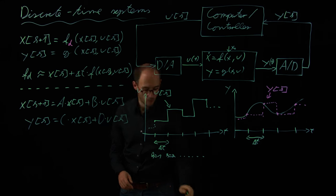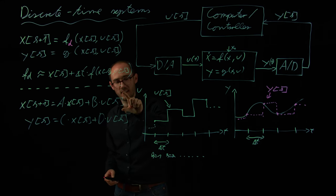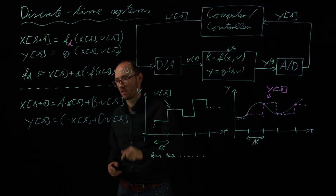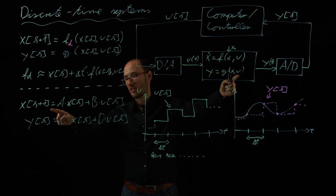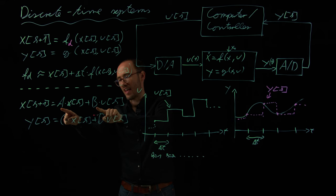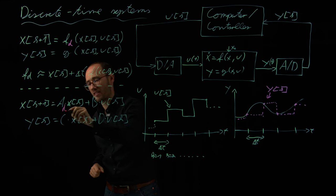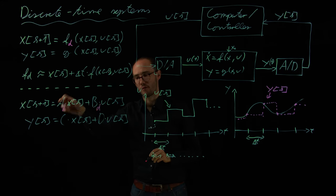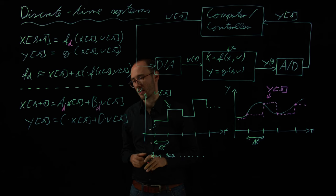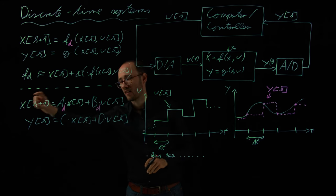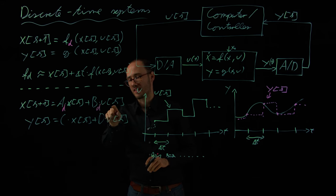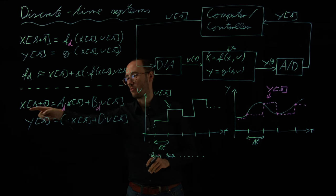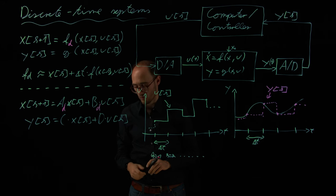And here, again, we need to differentiate between the state dynamics and the output equation. Because the state dynamics, if we compare it with our continuous time model, this is not the A and B from the continuous time domain. But this is actually an A_d and B_d, a discretized version out of it, which we can generate from the continuous time domain. This is, again, becoming a difference equation, which basically tells us an explicit calculation rule to get from x[k] to x[k+1] using the knowledge of u[k].